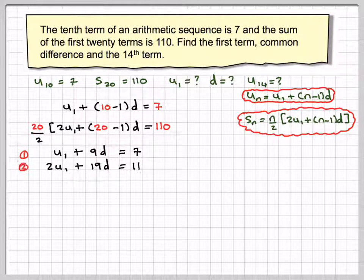And then from this one, we're going to get that 2U1 plus 19D. 20 divided by 2 is 10, 10s into 110 is 11. So we're going to have 2U1, 20 minus 1, 19D is equal to 11.